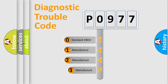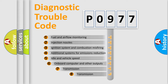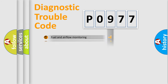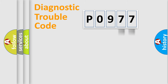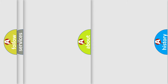If the second character is expressed as zero, it is a standardized error. In the case of numbers 1, 2, or 3, it is a more manufacturer-specific expression of the car error. The third character specifies a subset of errors. This division is valid only for the standardized DTC code, where only the last two characters define the specific fault of the group.